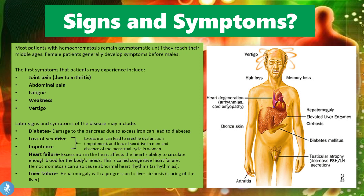Later signs and symptoms include diabetes, due to damage to the pancreas from excess iron accumulation. There can also be a loss of sex drive and impotence due to iron accumulation in hormonal organs such as the ovaries and testes, leading to erectile dysfunction in men and absence of the menstrual cycle in women. Heart failure — specifically congestive heart failure — can develop, along with arrhythmias. Finally, liver failure with hepatomegaly and progression to liver cirrhosis may occur.